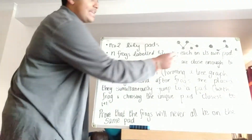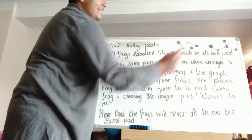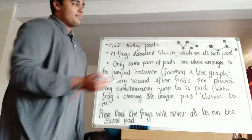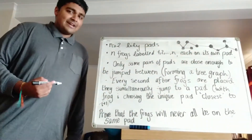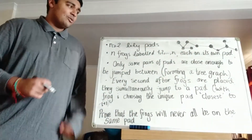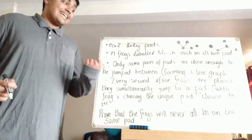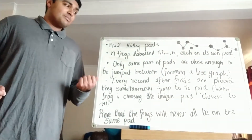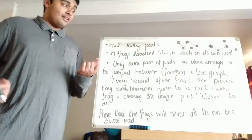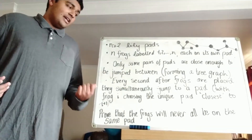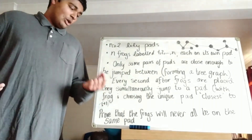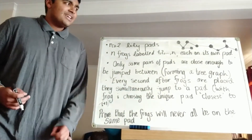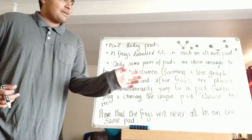However, there's no edge between say this lily pad and this lily pad — between this vertex and this vertex — so that means we can't jump from that lily pad to that lily pad. Every second after the frogs are initially placed, they simultaneously jump to another lily pad, with frog i choosing the unique pad closest to frog i+1. I've written 'closest' in inverted commas and I'm going to explain what that means right now.